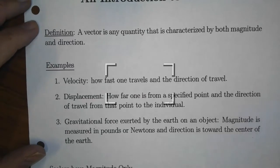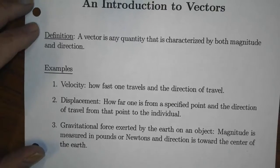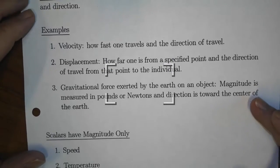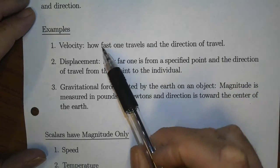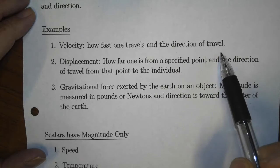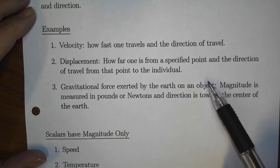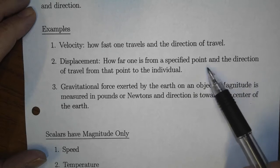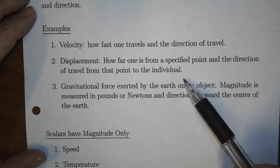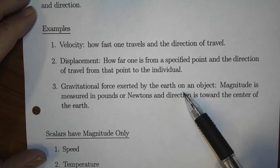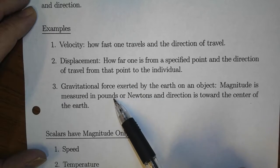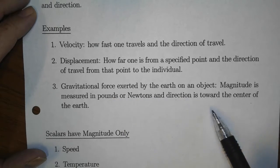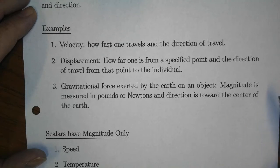Simply put, a vector is any quantity that is characterized by both magnitude and direction. Examples of vector quantities include velocity — how fast one travels and the direction of travel — as well as displacement, how far one is from a specified point and the direction from that point to the individual. Gravitational force is another example: the magnitude is measured in pounds or newtons, and the direction is toward the center of the Earth. So two attributes: magnitude and direction.